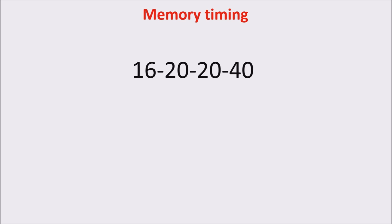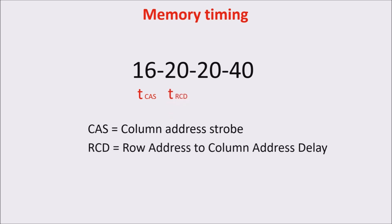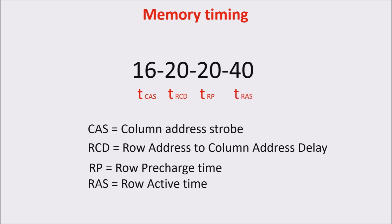Absolute latency and system performance are determined by both the timings and the memory clock frequency. The first timing is considered the most important and is called CAS, which stands for Column Address Strobe. The second is called Row Address to Column Address Delay, the third is called Row Pre-Charge Time, and the last is called Row Active Time.